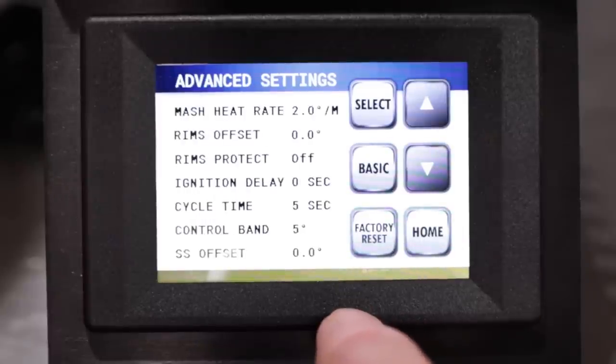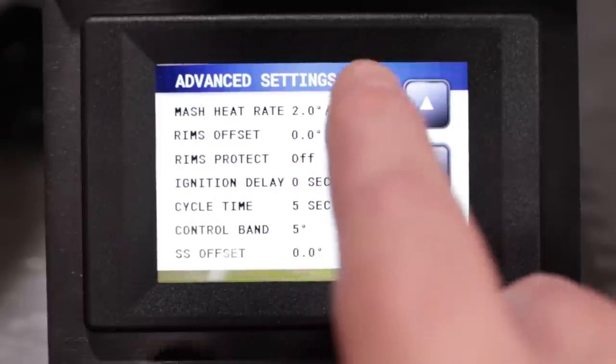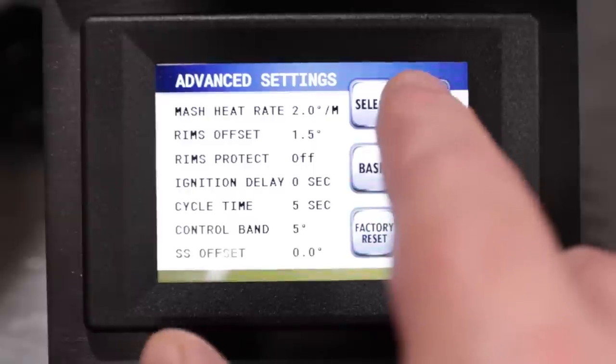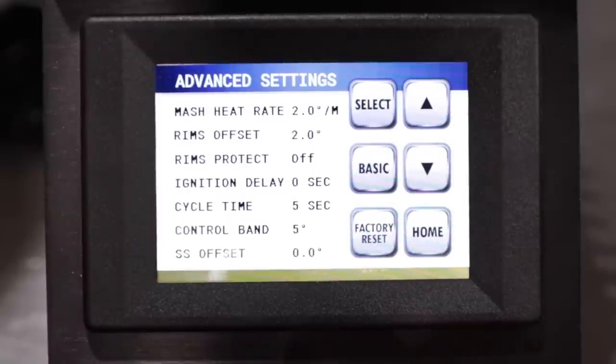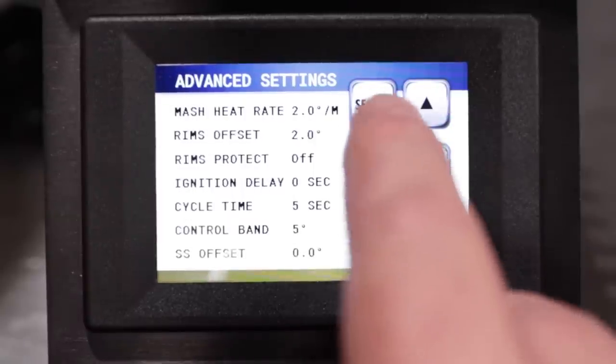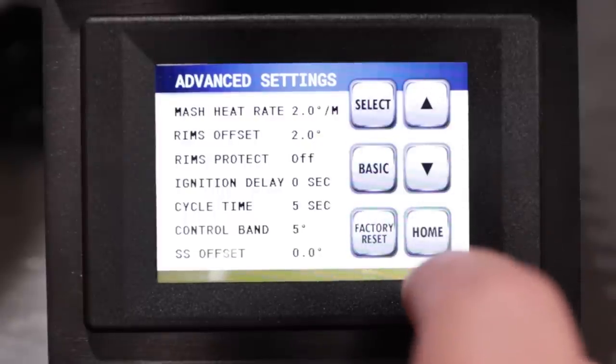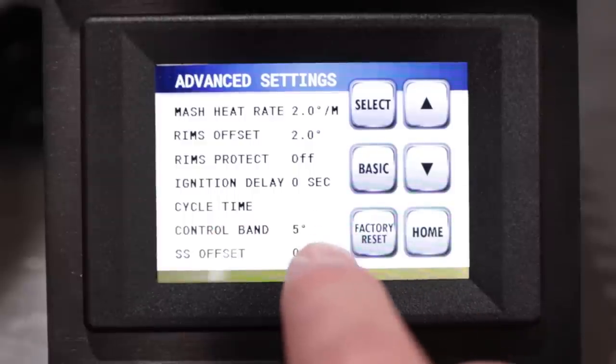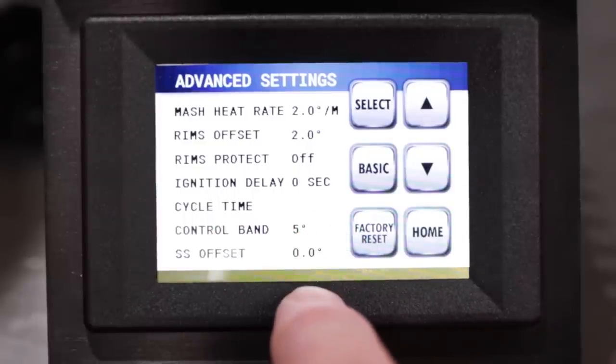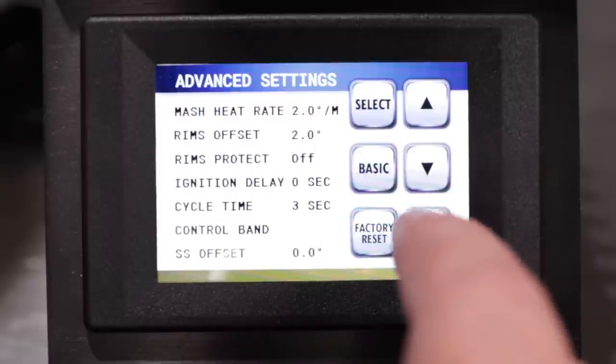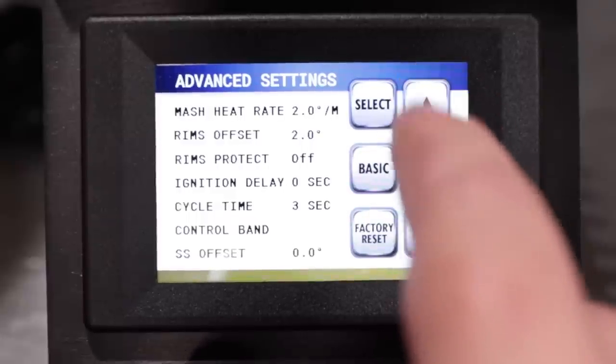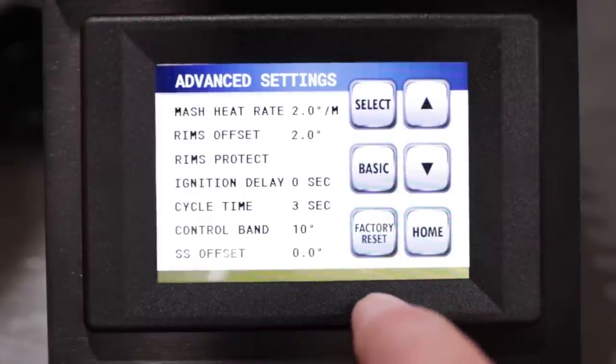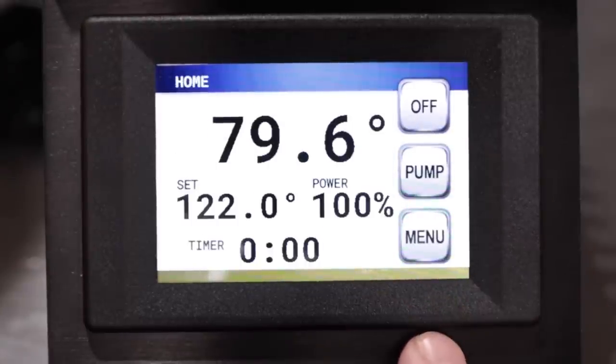Now in the advanced settings, they say to make the RIMS offset two degrees. Understand that these are all just basic guidelines, and you'll have to dial this in with your individual system based on your own hardware. Then the cycle time, they're saying to set that to three seconds. So basically that's going to trigger the element to heat, to come on more often. That way try to maintain your temperature a little bit better. And then the control band, they are saying to set that to 10 degrees. The other thing that they definitely recommend with the RIMS system especially is that you turn the RIMS protect on, and that would be your basic settings for your RIMS setup.